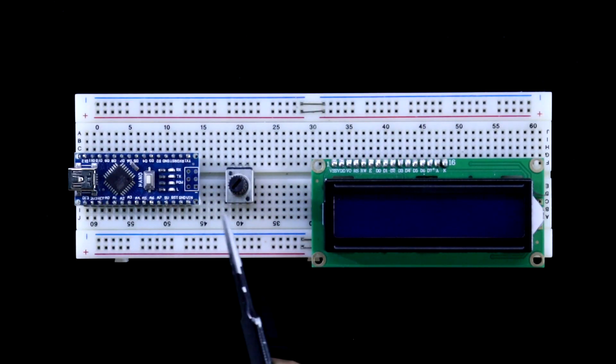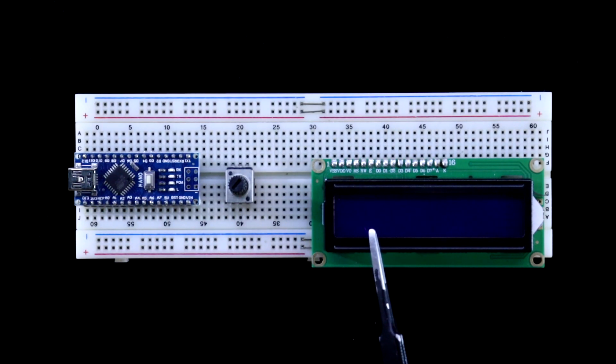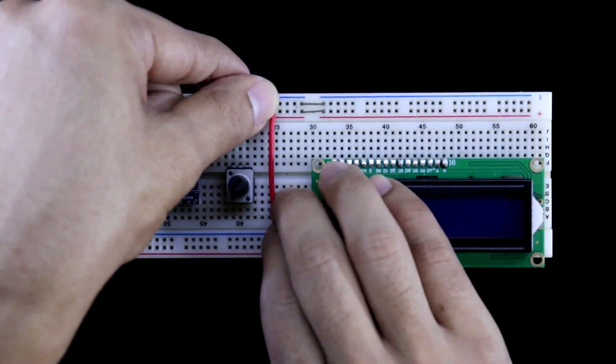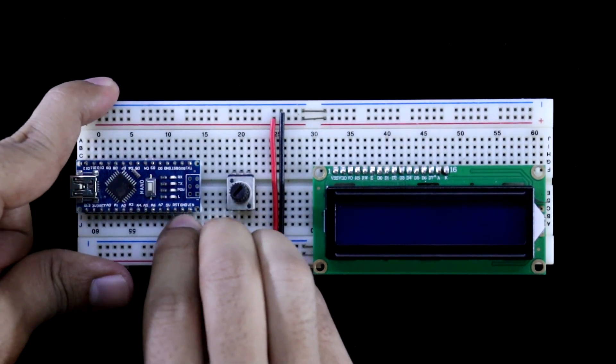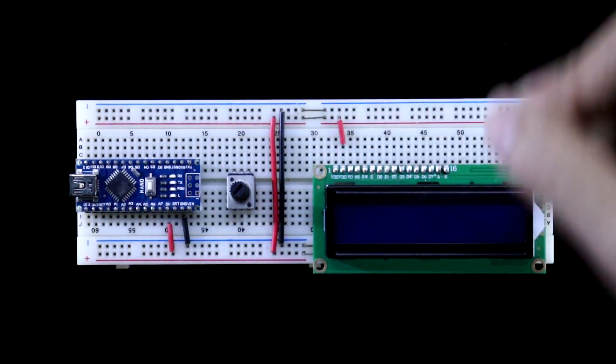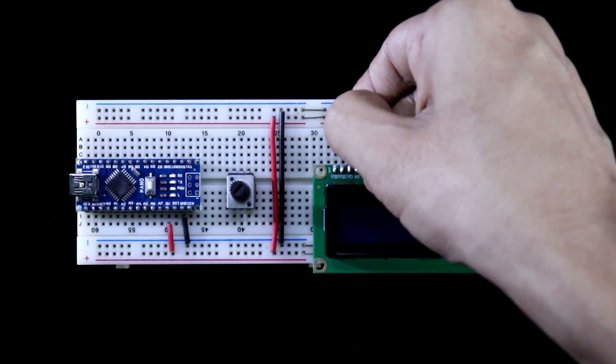Arduino Nano, 10 kilo ohms potentiometer and the display. Connect both the positive and the negative rails. 5V and ground is connected to the positive and the negative rails. VDD and VSS is connected to the positive and negative rails.